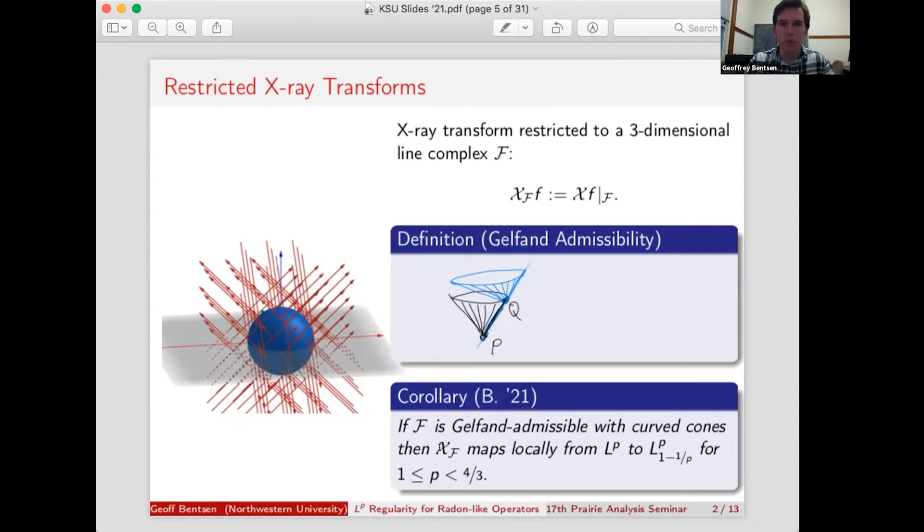Now, I said this is an example of a local radon-like operator. What are they in general? The thing that characterizes them is you take a function in RD, you integrate it over some family of smooth surfaces, manifolds, curves, what have you, and you get a function that is at least locally in RD again.